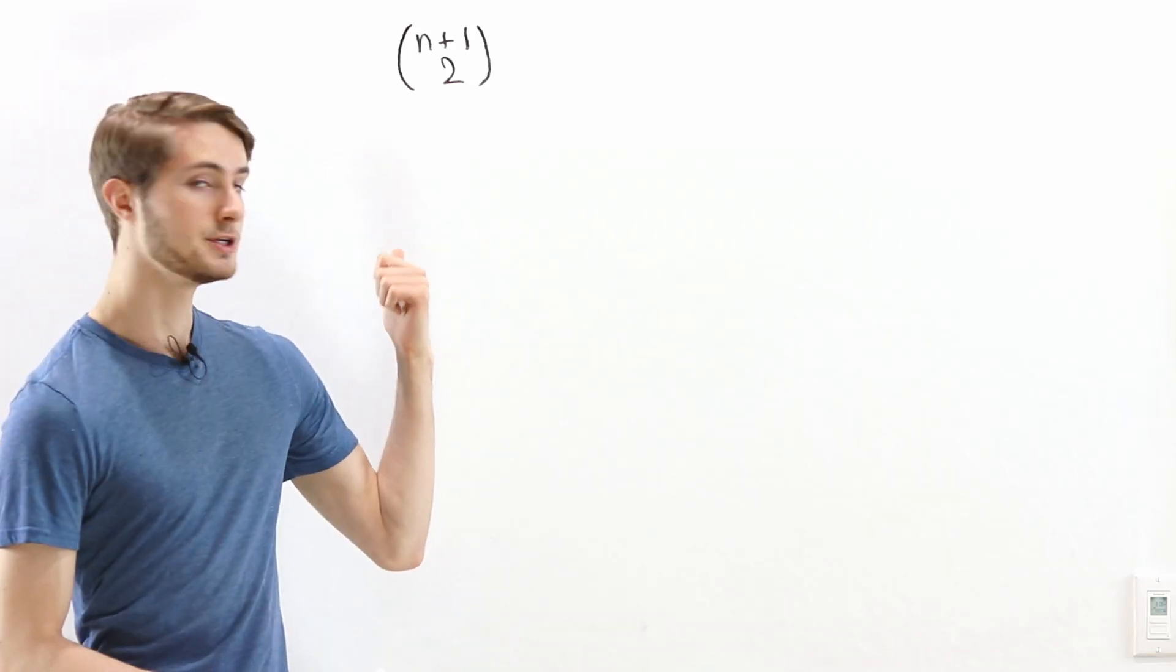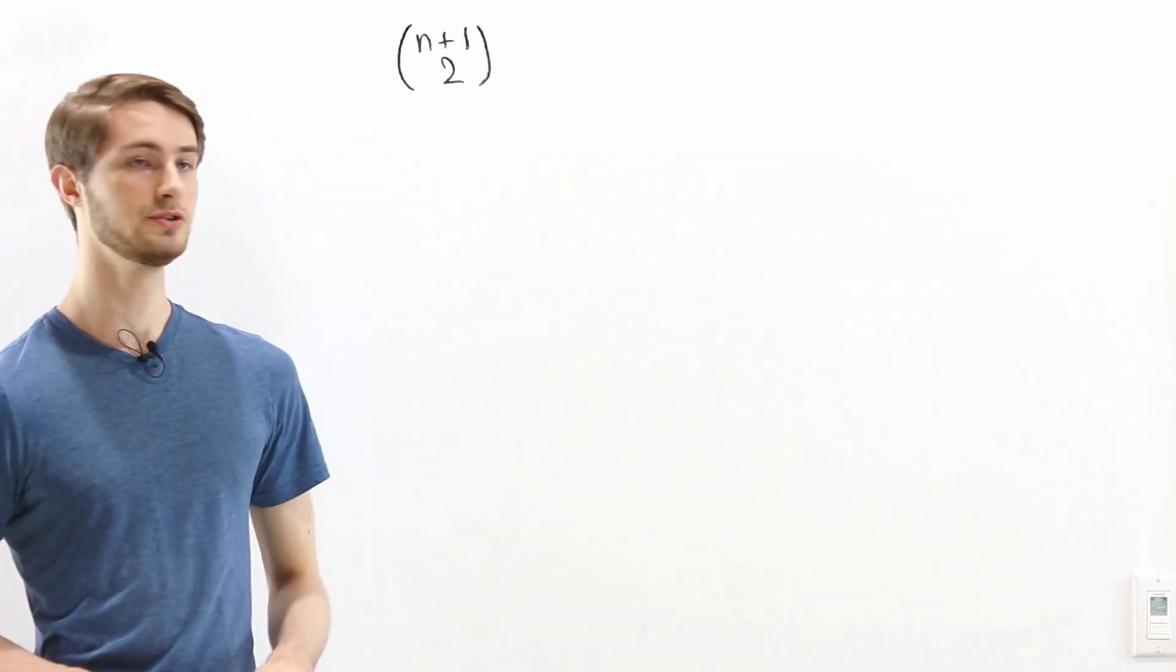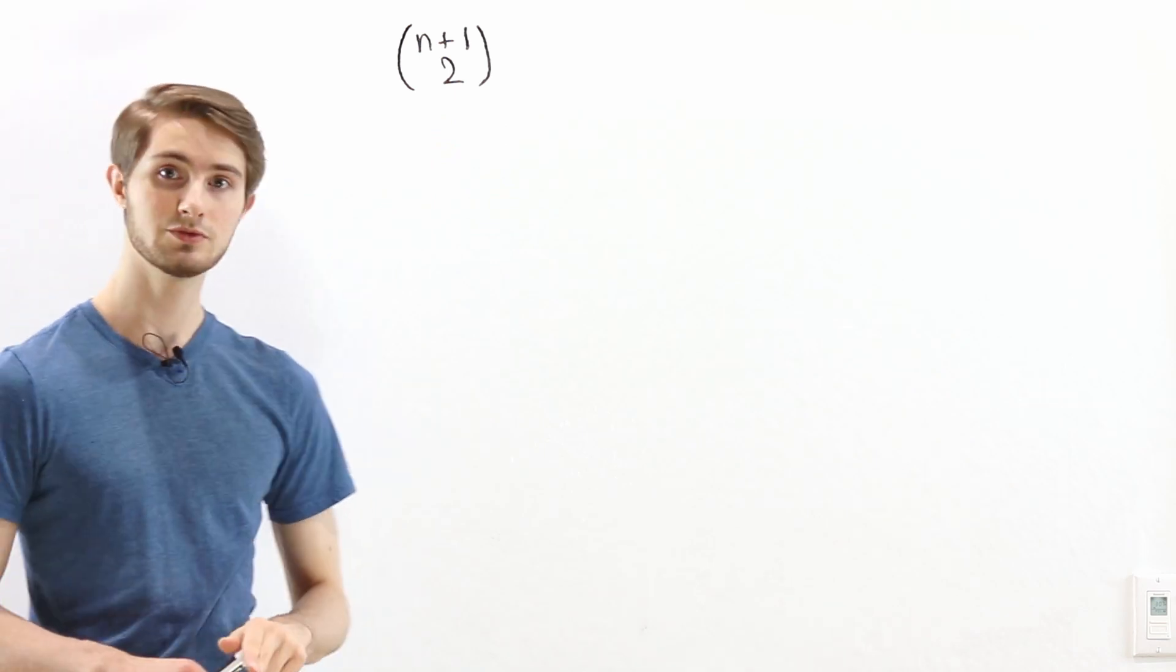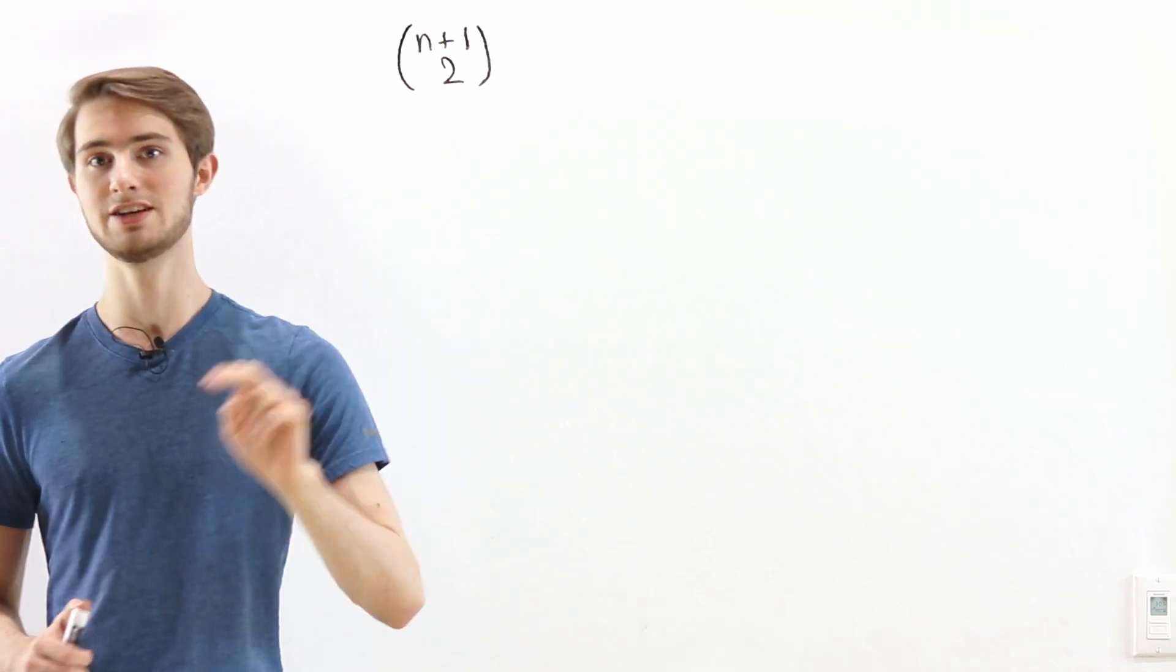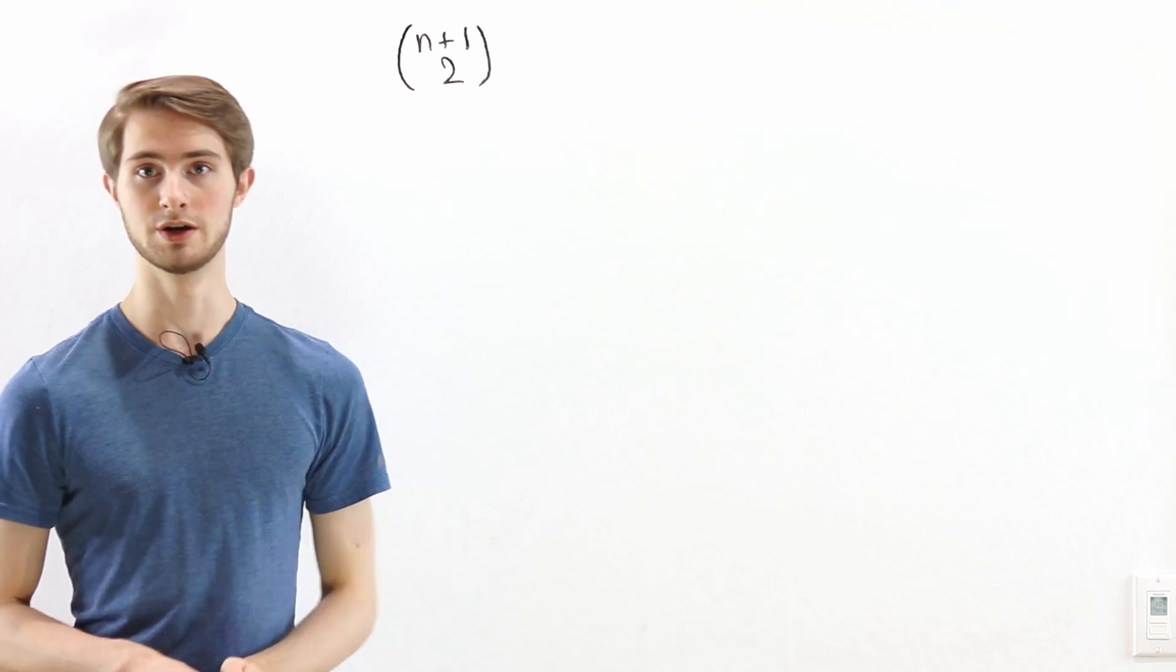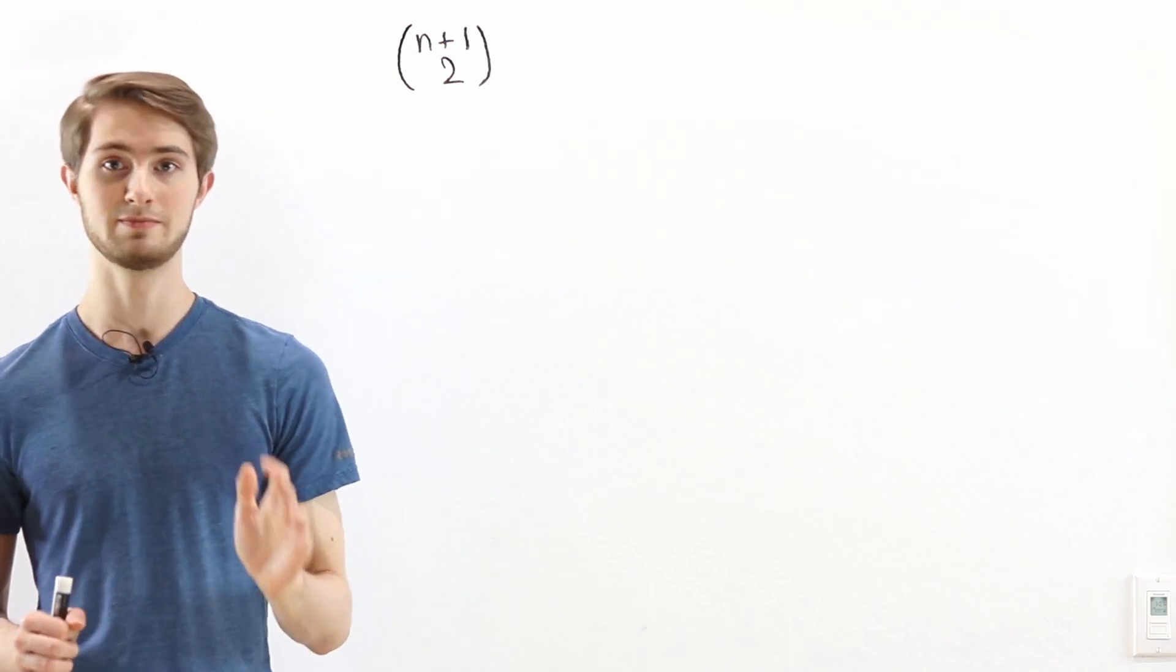So let's say we wanted to find the value of n plus 1 choose 2. By definition, this is the number of ways to choose two distinct integers from the range 1 to n plus 1, where we say that order doesn't matter.